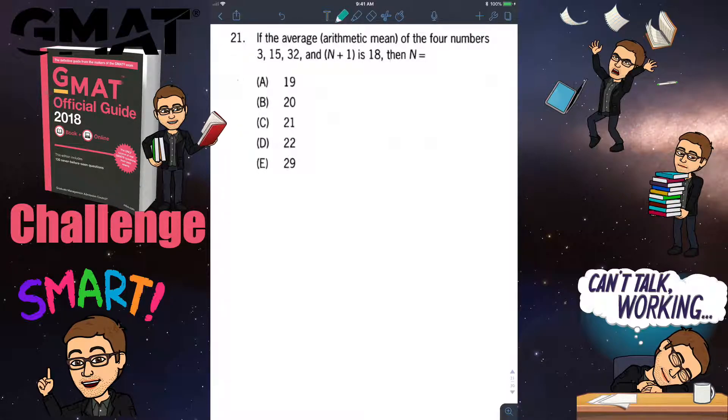We can solve this problem very easily. First, add all the numbers: 3 plus 15 plus 32 plus n plus 1, divided by the number of numbers. Since n plus 1 is actually one number, we have four numbers in total. Divided by 4 gives you the average which is 18.